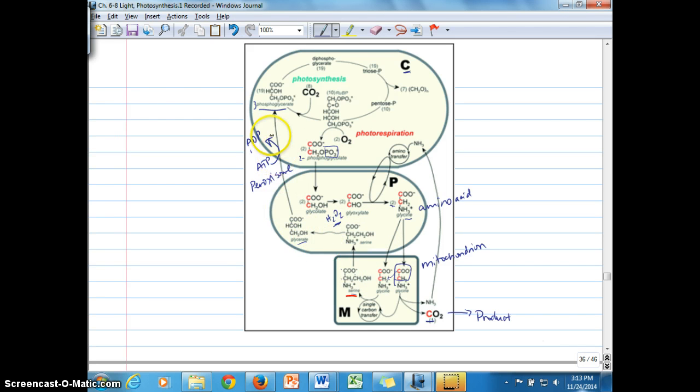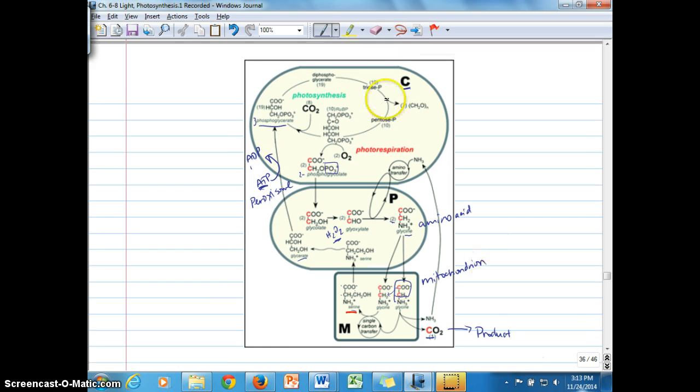into the mitochondrion and back uses energy, so it's not very energy cost effective, and it does not regenerate this pentose phosphate group, which is the RUBP, because it bypasses that step. It's all within this cycle here.